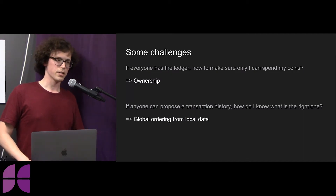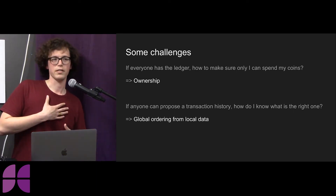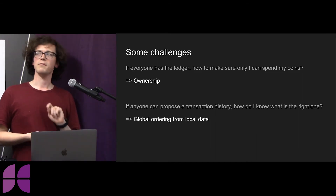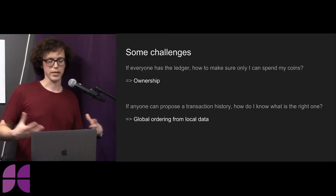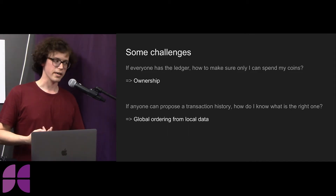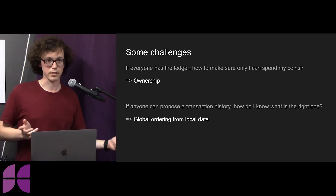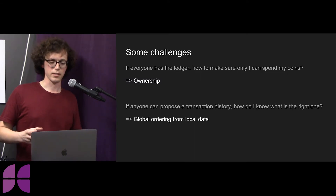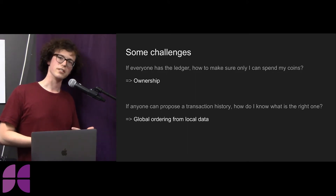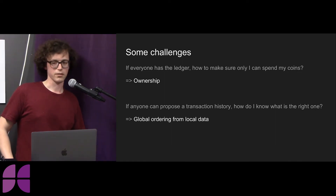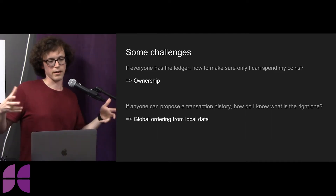There are some challenges here. First, if everyone has their own ledger, how do I know what the real ledger is? How can I make sure only I can spend my coins and not you? If you have my ledger you could just change a number and steal my coins. We need some notion of ownership built into the protocol. Moreover, if anyone can propose the transaction history on the decentralized network, how do we pick the right one? We need to constrain histories to those that make sense, avoiding things like double spends or deleting coins.